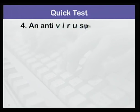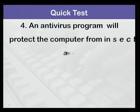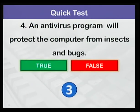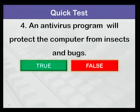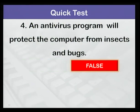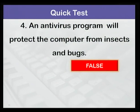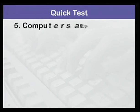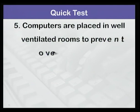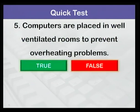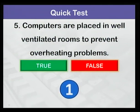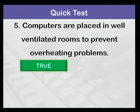Number four: an antivirus program will protect the computer from insects and bugs. False — the antivirus protects your computer from malware and other dangerous programs. And finally, number five: computers are placed in well-ventilated rooms to prevent overheating problems. True again — a well-ventilated room will prevent overheating problems.